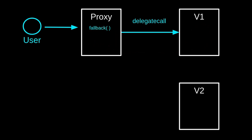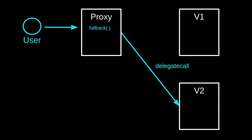This means that the code inside the implementation will be executed using the state variables inside the proxy. Later, let's say that we deploy a version 2 of the implementation. Then we can upgrade the smart contract by routing all transactions from the user to version 2 instead of version 1. This is how a combination of proxy, fallback, and delegate call enables a contract to be upgraded.